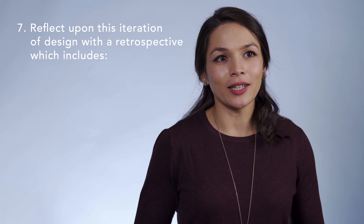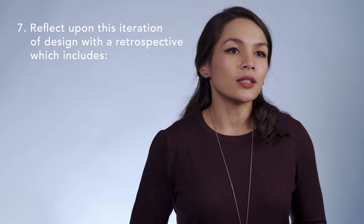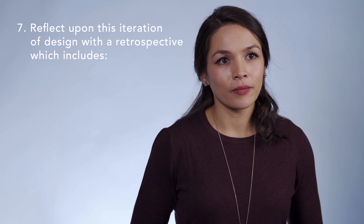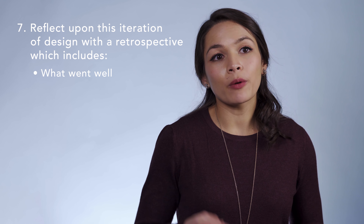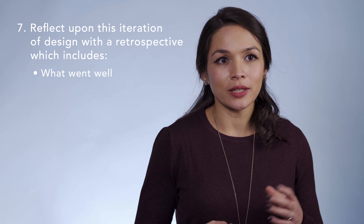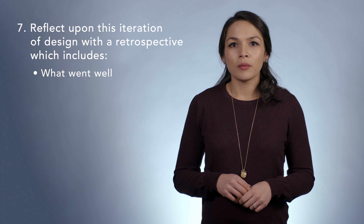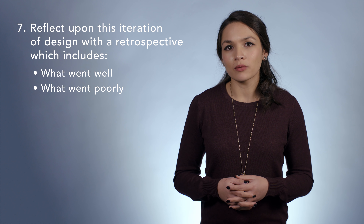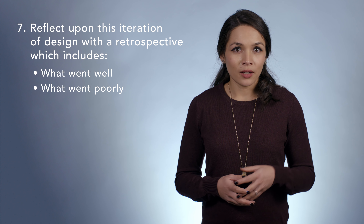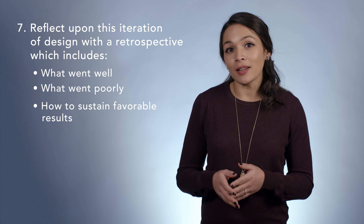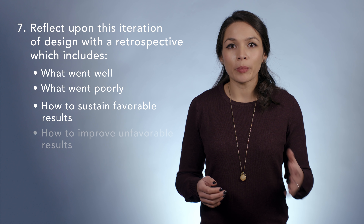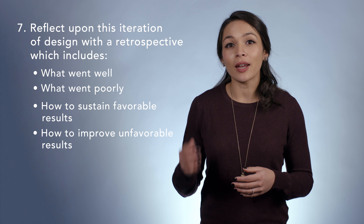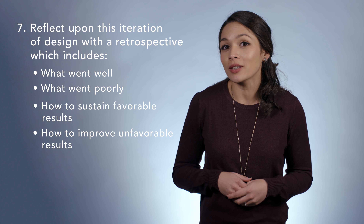In the Army, we call it an after-action review. In some firms, it's called a retrospective — you can call it whatever you'd like. Here's what you cover: things that went well after implementing, positive notes or good things that happened; things that did not go well, unexpected or unfavorable results of our choices. Then we talk about how we might sustain the positive results and improve upon the less favorable ones. These findings shape the next initiative that we might undertake as an organization.